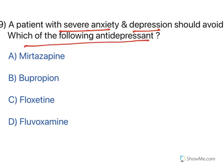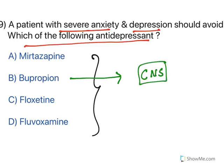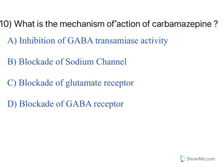A patient with severe anxiety and depression should avoid which of the following antidepressants? All options are antidepressants, but bupropion has problematic CNS side effects — it causes increased CNS excitation. Since the patient already has anxiety, anxiety will be aggravated by bupropion's CNS adverse effects. Therefore bupropion has to be avoided.